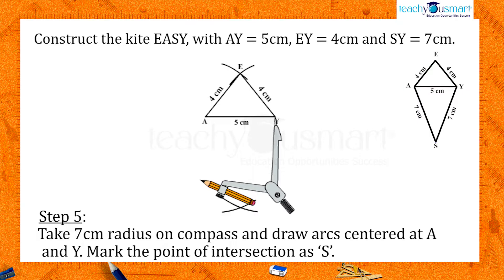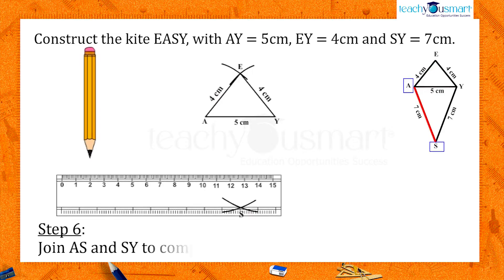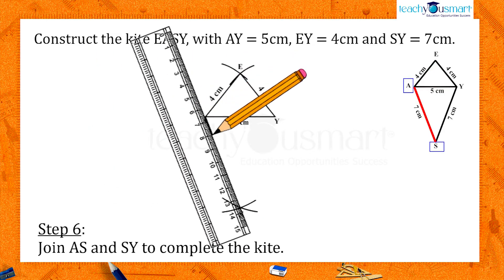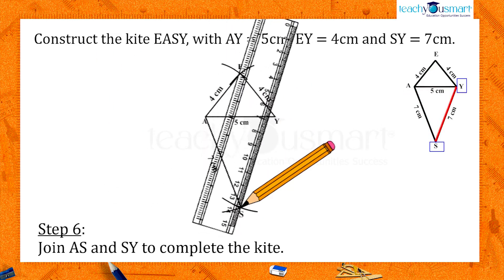The point of intersection of these arcs is the required point S. Now join AS and SY to complete the kite.